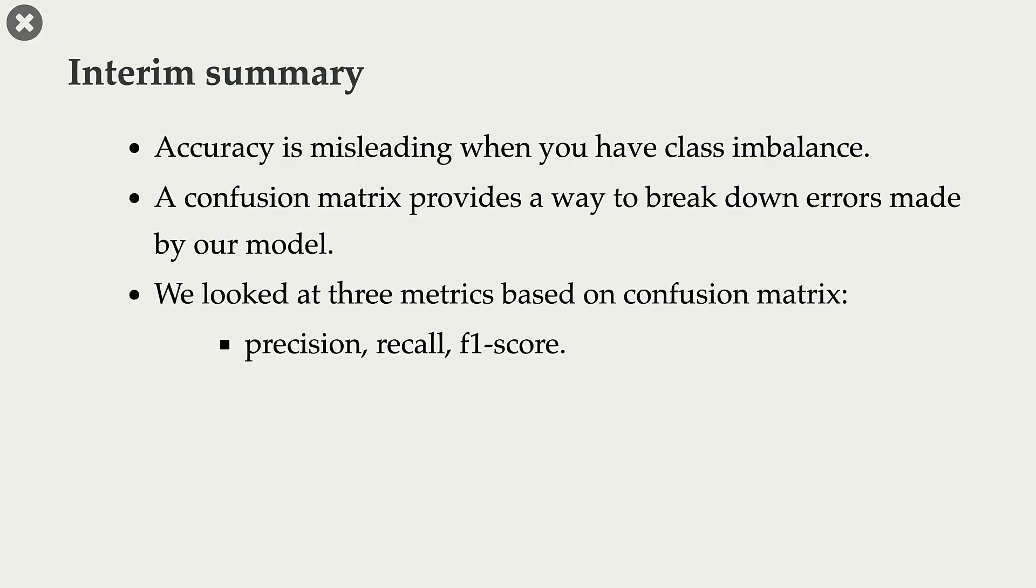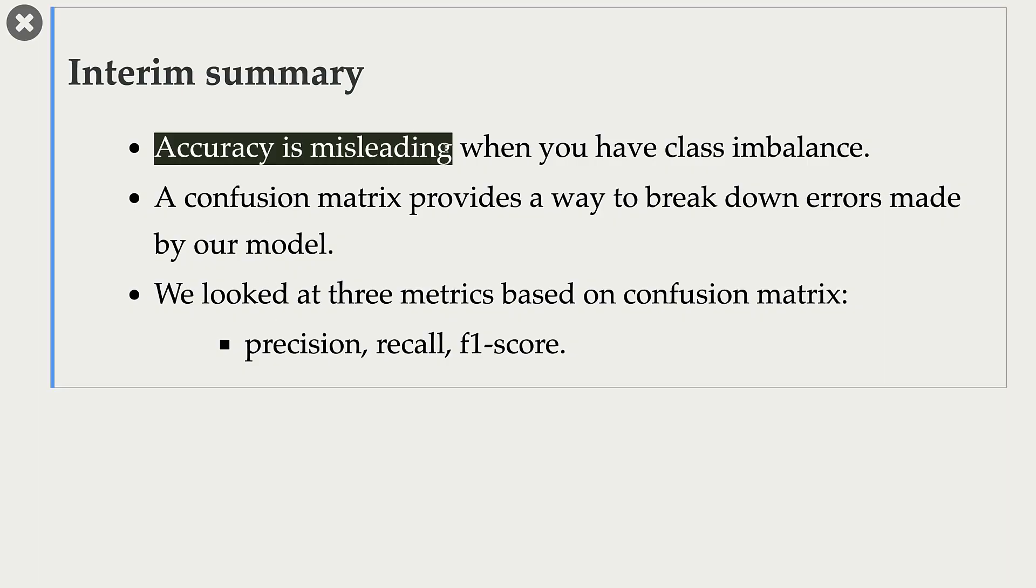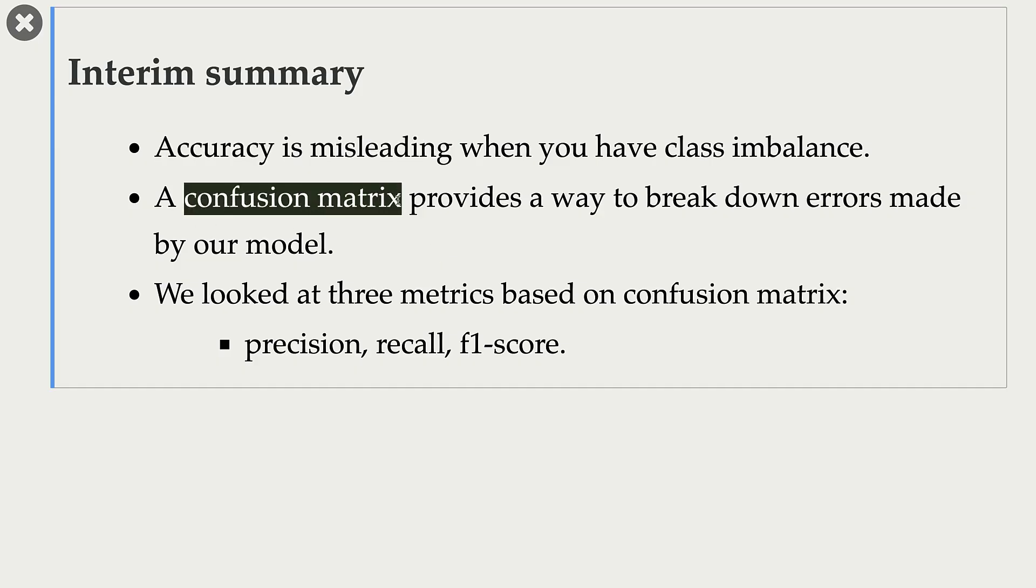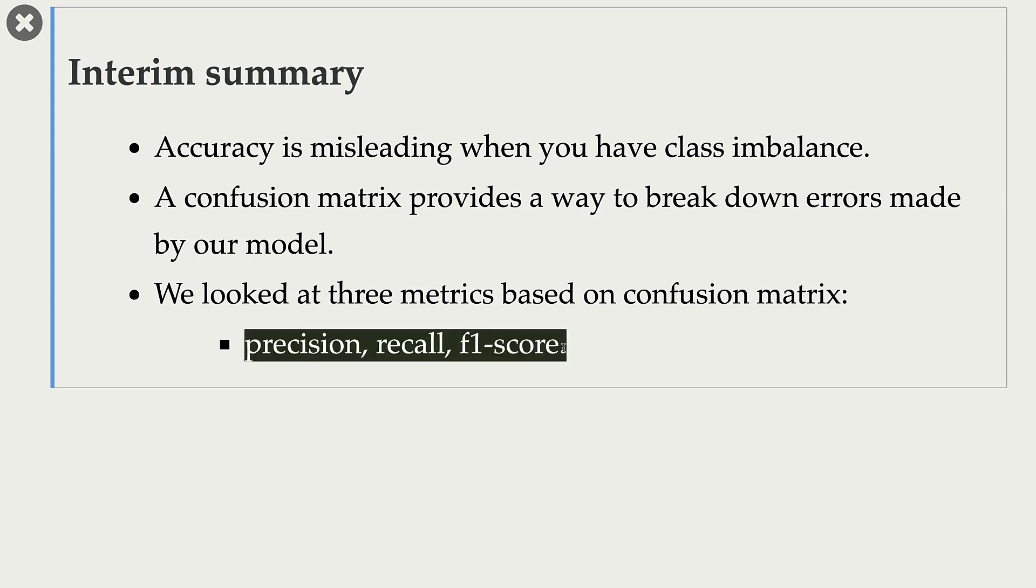So far, what all things have we seen? We have seen that accuracy is misleading when you have class imbalance. Confusion matrix provides this nice way to break down errors made by your model. We looked at three metrics, which are based on confusion matrix: precision, recall, and F1 score.